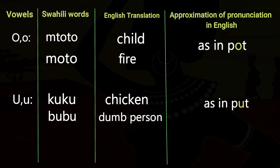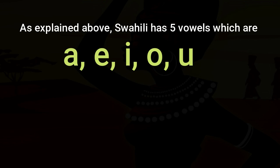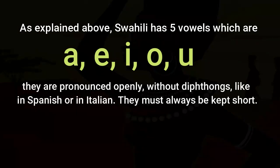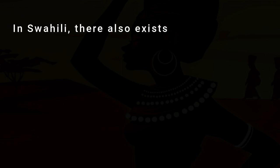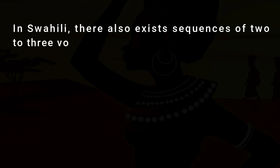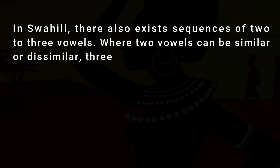As explained above, Swahili has five vowels: A, E, I, O, U. They are pronounced openly without diphthongs, like in Spanish or Italian, and they must always be kept short. In Swahili, there also exist sequences of two to three vowels, where two vowels can be similar or dissimilar.